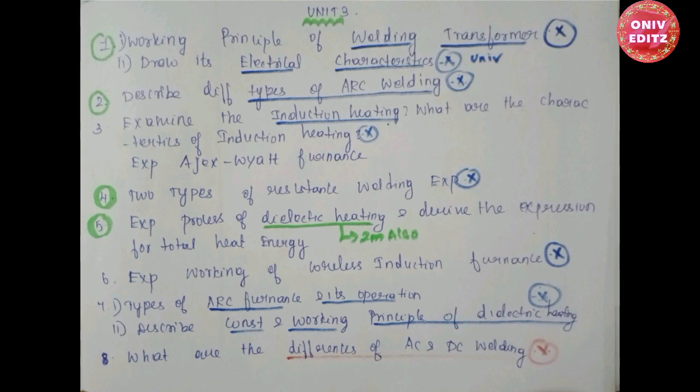Fourth question: explain two types of resistance welding. Explain the process of dielectric heating and derive the expression for total heat energy. Explain the working of coreless induction furnace. Types of arc furnace and their operation. Describe the construction and working of dielectric heating.